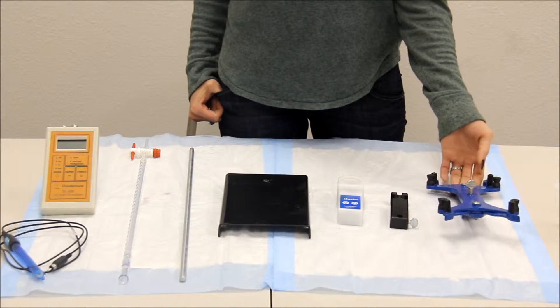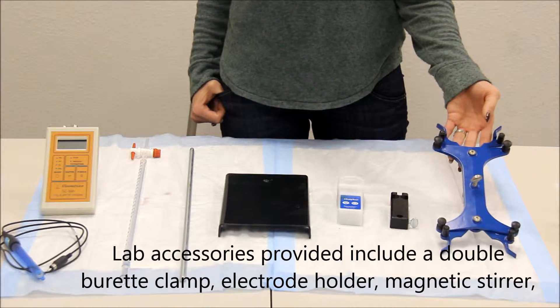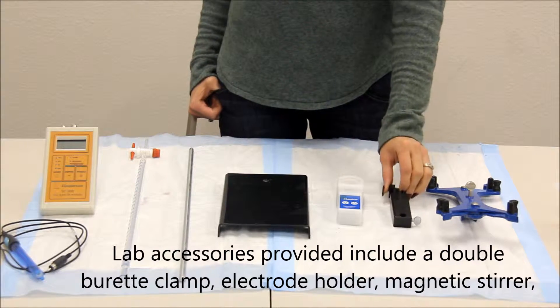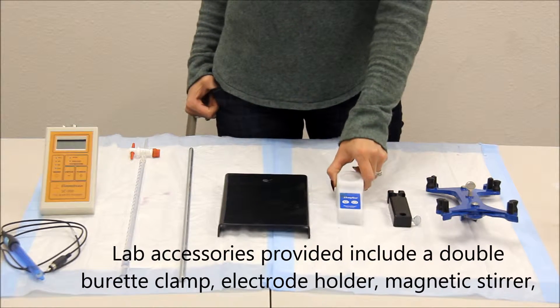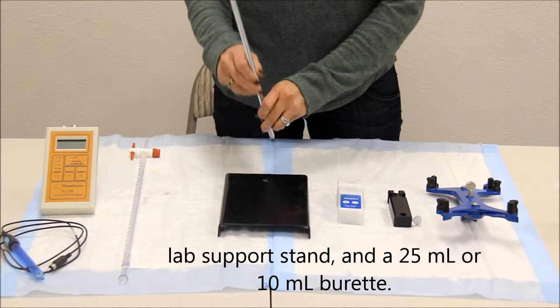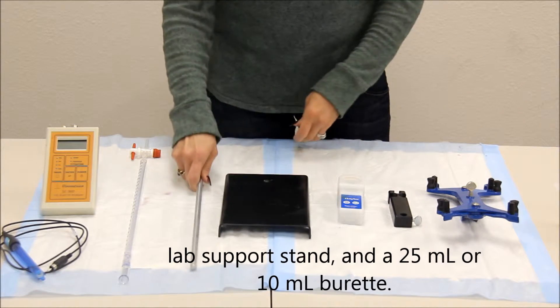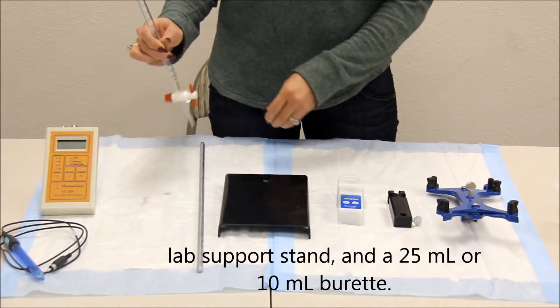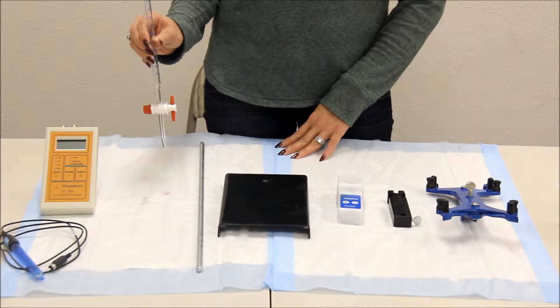Both kits come with the double burette clamp, electrode holder, magnetic stirrer, lab stand, and they will come with either a 25 or 10 mil burette.